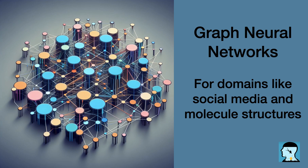For instance, in the context of a molecule, a model can learn to detect the type of bond that should be present between atoms — that's a link-level task. In the case of a social network, we could use the information from the complete graph to distinguish between the profiles of politicians and athletes — that's a graph-level task. This demonstrates how diverse problems can be addressed by leveraging graph structures.